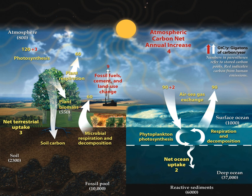Carbon in the Earth's atmosphere exists in two main forms: carbon dioxide and methane. Both of these gases absorb and retain heat in the atmosphere and are partially responsible for the greenhouse effect. Methane produces a larger greenhouse effect per volume as compared to carbon dioxide, but it exists in much lower concentrations and is more short-lived than carbon dioxide, making carbon dioxide the more important greenhouse gas of the two.